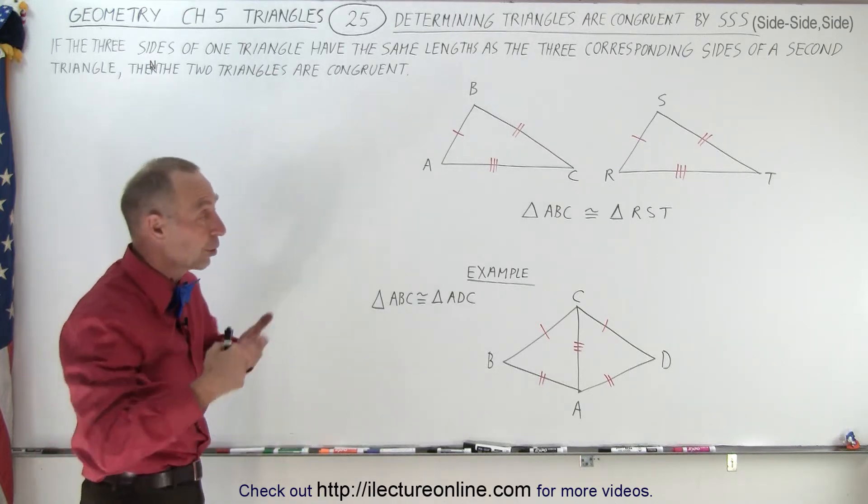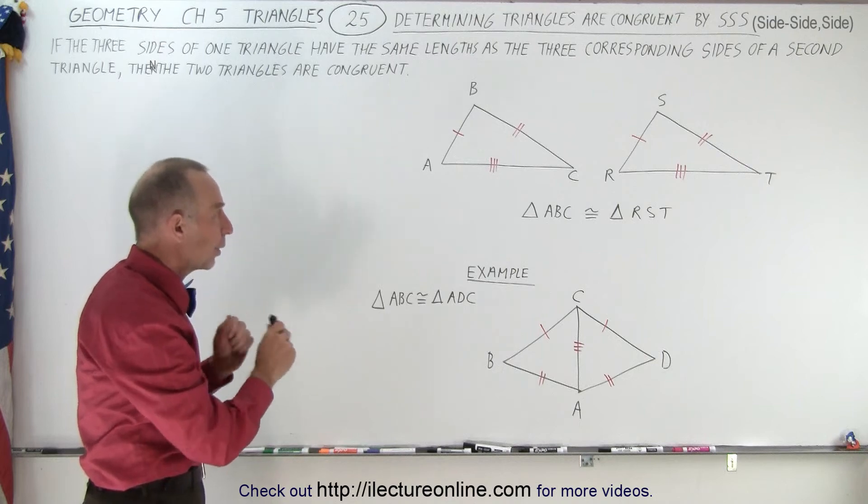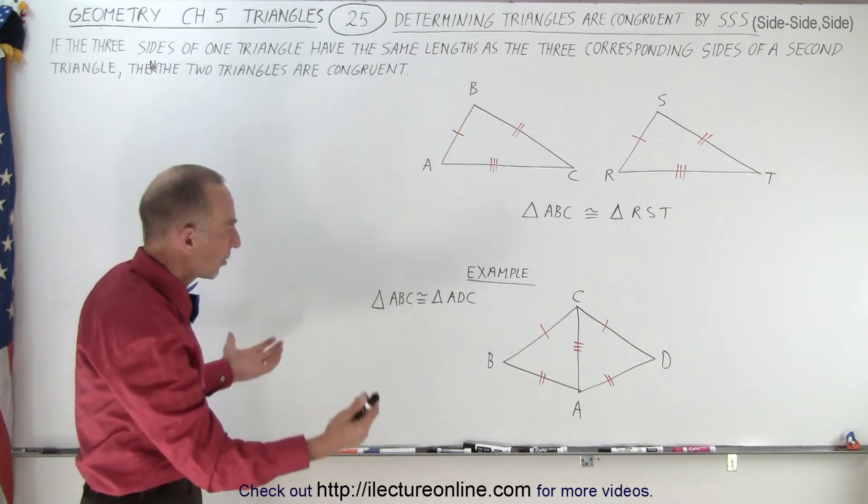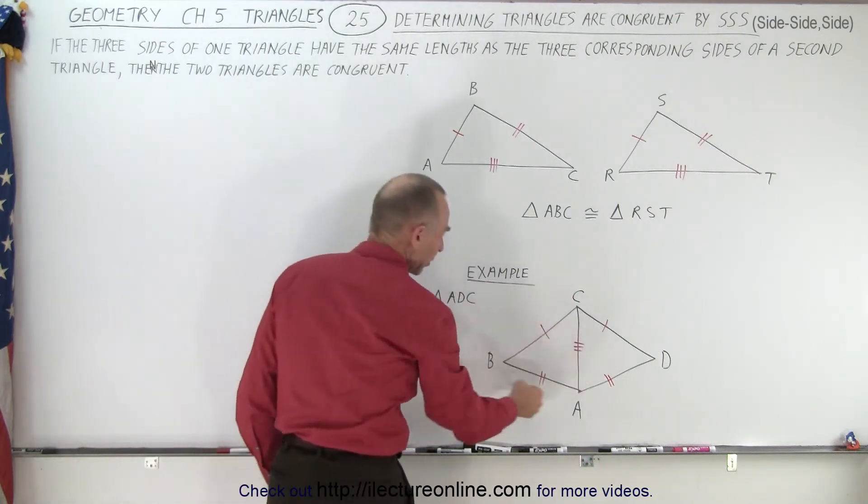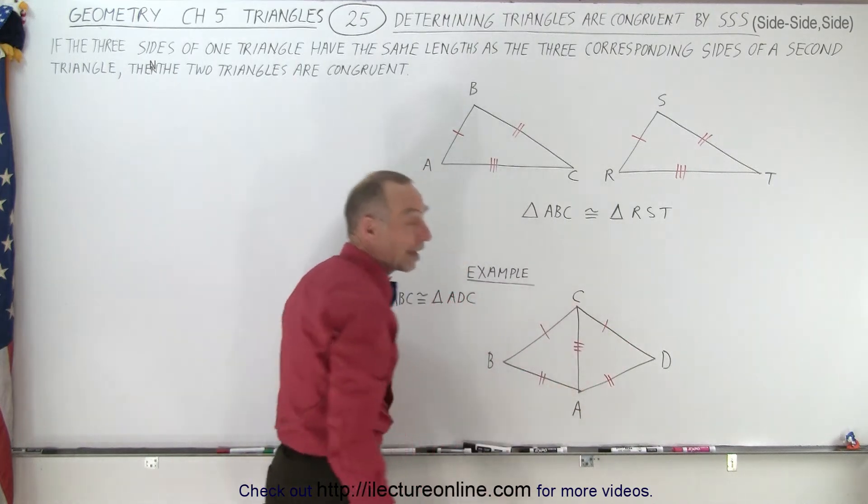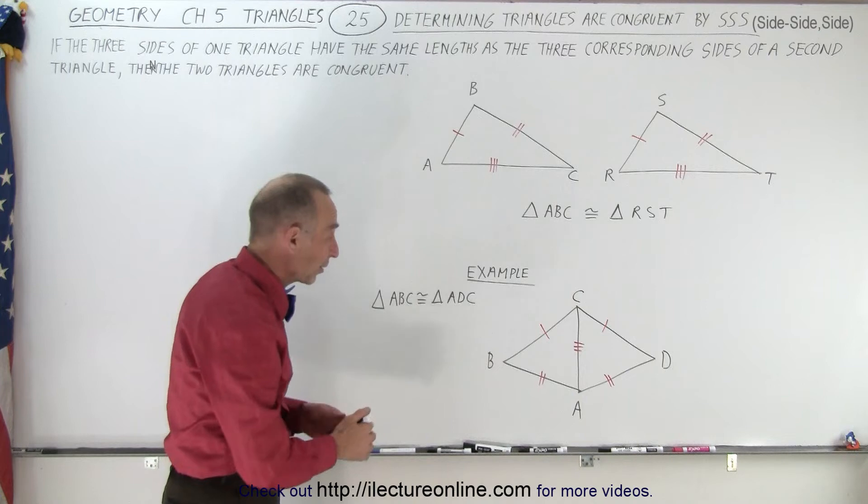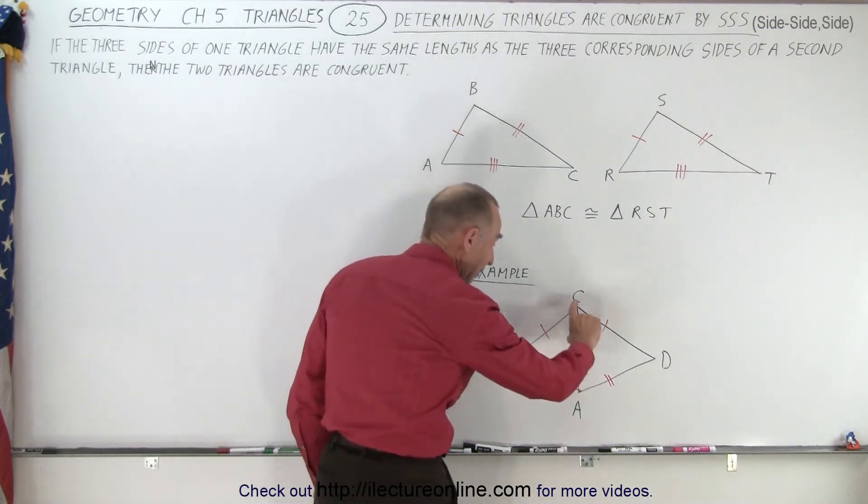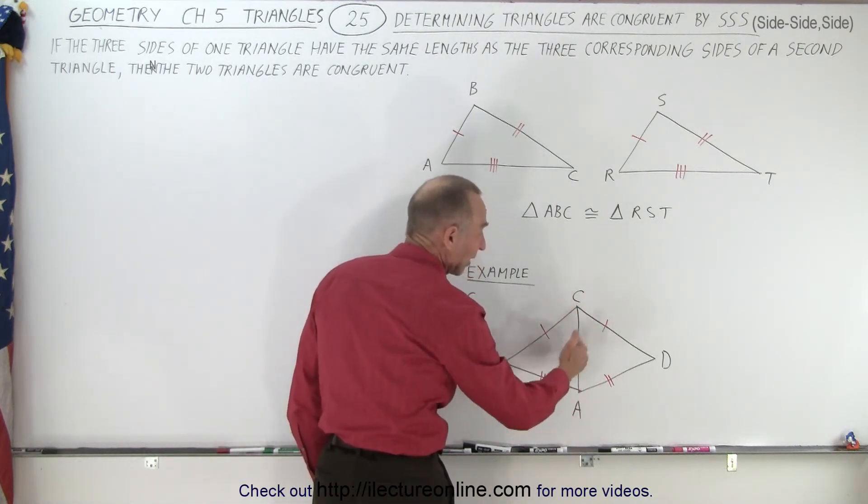Now there are of course other ways in which we can determine congruency, but that one is ironclad. As an example, here we have one triangle and a second triangle. Notice that one of the sides is common for both triangles, so we definitely know that the length of this is the same for both triangles.